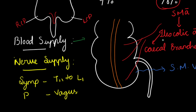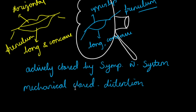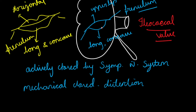Blood supply is through cecal branches from the ileocolic artery, a branch of the superior mesenteric artery. Venous drainage is through the superior mesenteric vein. Sympathetic supply is from T11 to L1; parasympathetic from the vagus. The special structure — the ileocecal valve — resembles the human lip, with a horizontal upper lip, a long concave lower lip, and frenula. It is actively closed by the sympathetic nervous system and mechanically closed by distension of the cecum. The next video will cover the appendix.